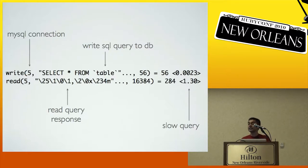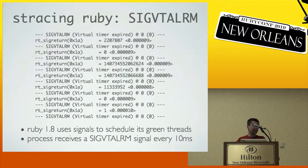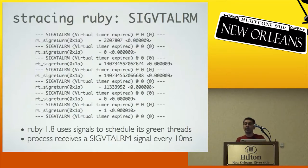If you run S-Trace on Ruby, one of the first things I noticed on a production Ruby instance was a lot of SIGVTALRM signals coming in every now and then. Ruby 1.8 uses signals to schedule its green threads. It tells the kernel: every 10 milliseconds, send me a signal, and every time I get that signal I'll know to switch threads.